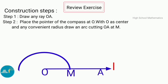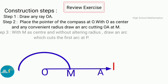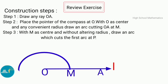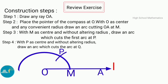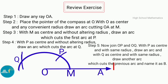Step 3 — with M as center and without altering the radius, draw an arc which cuts the first arc at P. Step 4 — with P as center and without altering the radius, draw an arc which cuts the arc at Q.